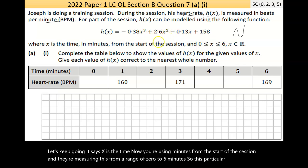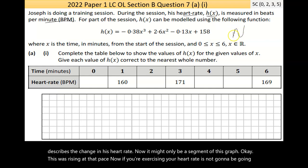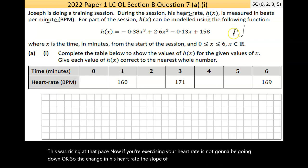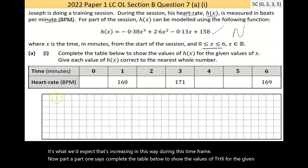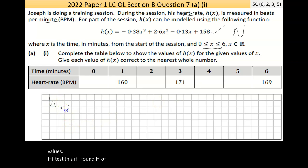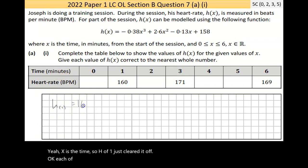For part of the session, h(x) can be modeled using the following function. It's an awkward cubic function with decimals. x is the time in minutes from the start of the session, measured from a range of zero to six minutes. Part A, part 1 says complete the table below to show the values of h(x) for the given values. If I test this, h of 1 should give me an answer of 160.